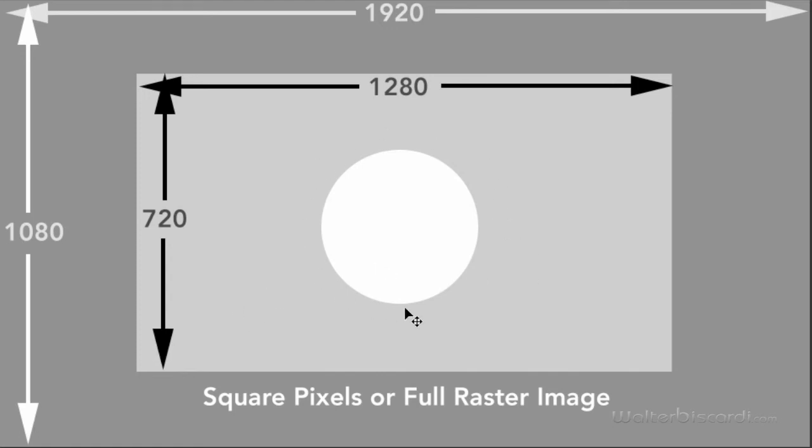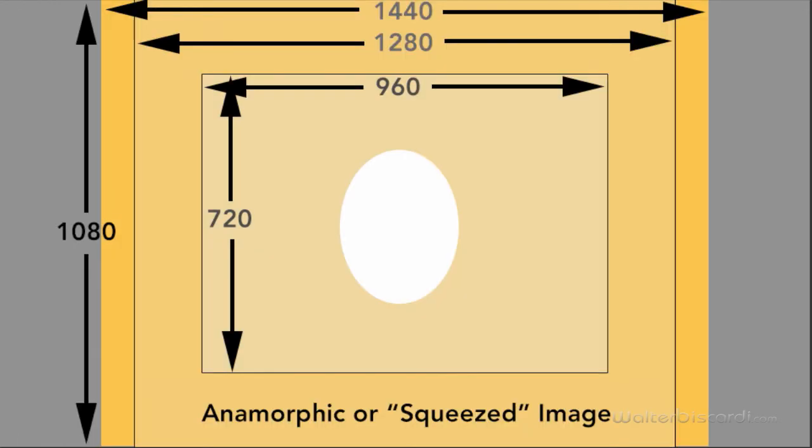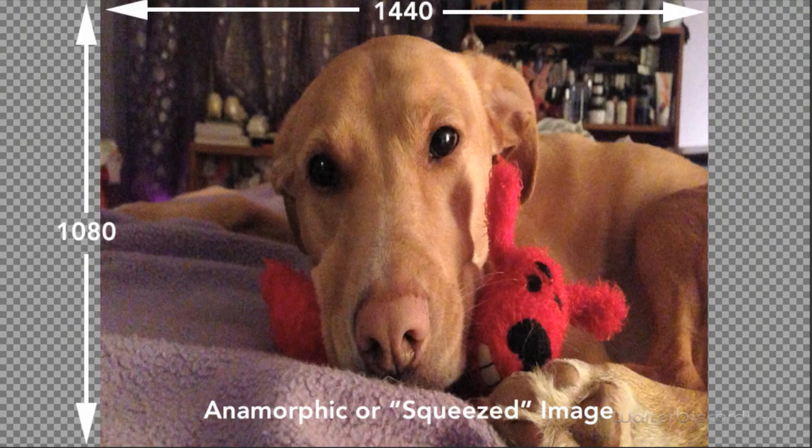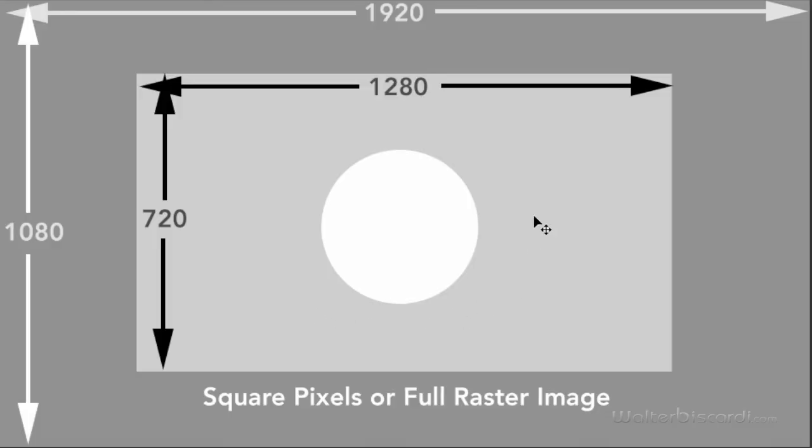Why? So that all of your graphics that you create will look proper when they come into your sequence. Sometimes, when you're working in an anamorphic sequence, you create graphics or other elements outside of the sequence, and they don't look correct, and you're not sure why. This is probably the reason why. So, always force your new sequences to be full raster before you start to edit.